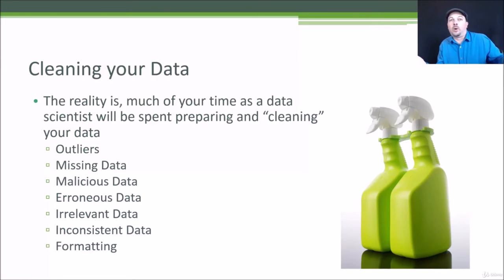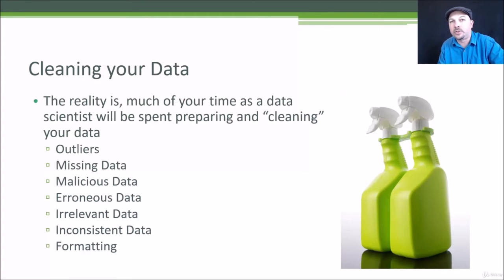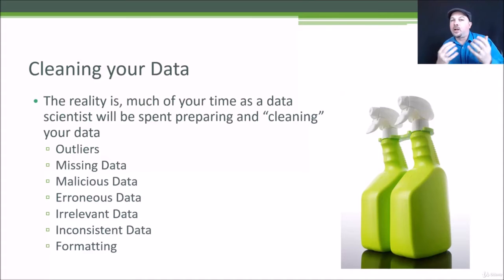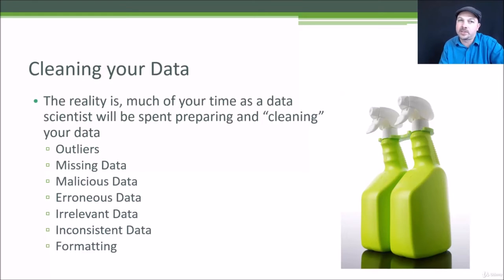Erroneous data: what if there's a software bug somewhere in a system that's writing out the wrong values in some situations? Unfortunately there's no easy way to know about that, but if you see data that looks fishy or results that don't make sense, digging in deeply enough can sometimes uncover an underlying bug causing the wrong data to be written. Maybe things aren't being combined properly, or session IDs are being dropped and regenerated as users move through a website.